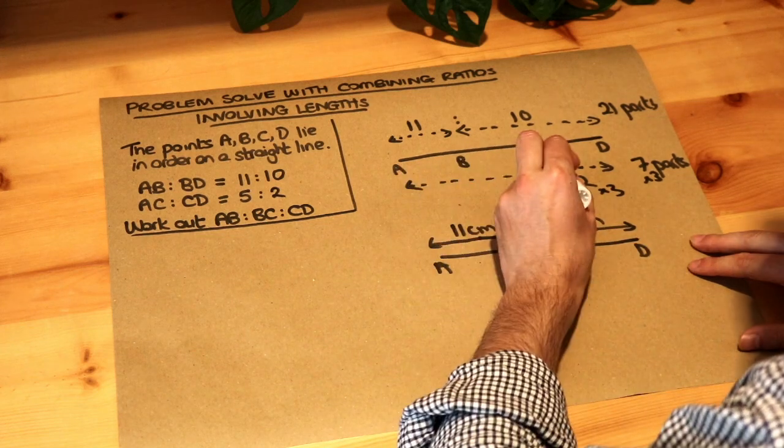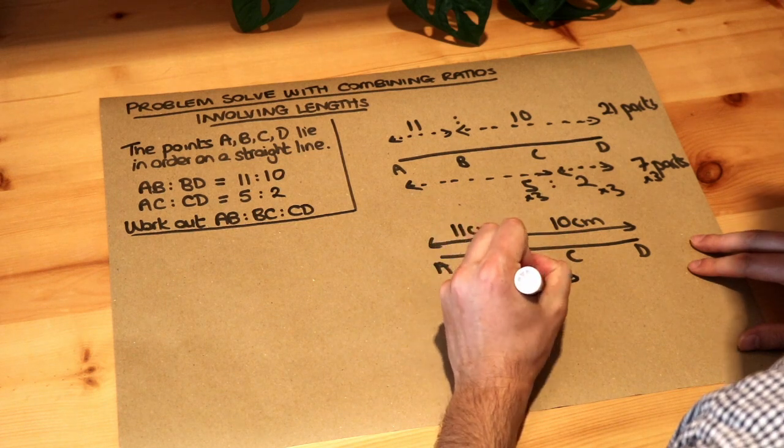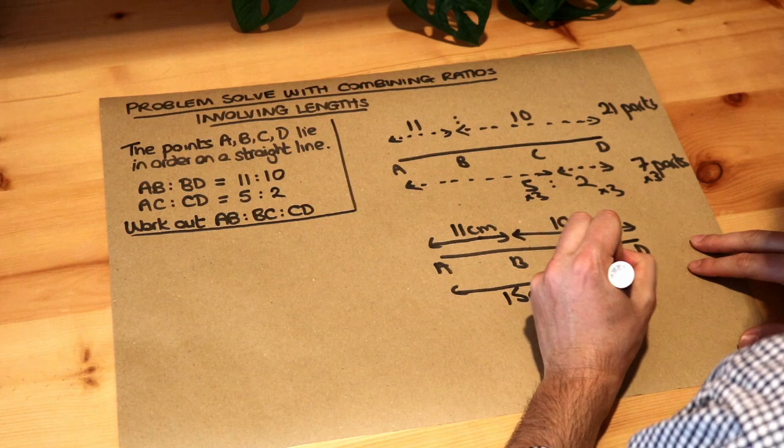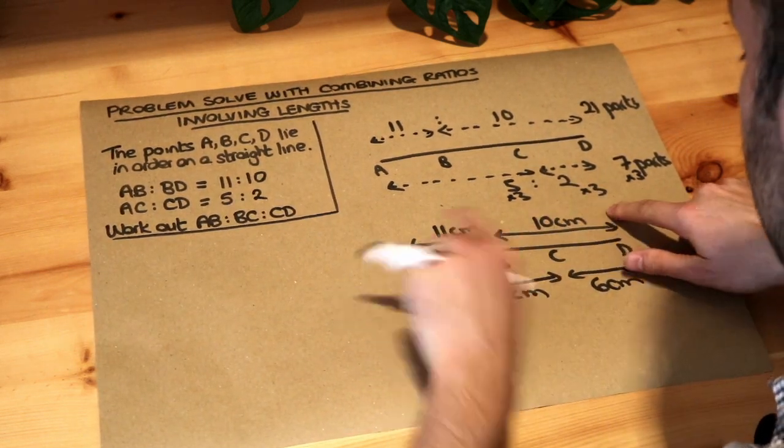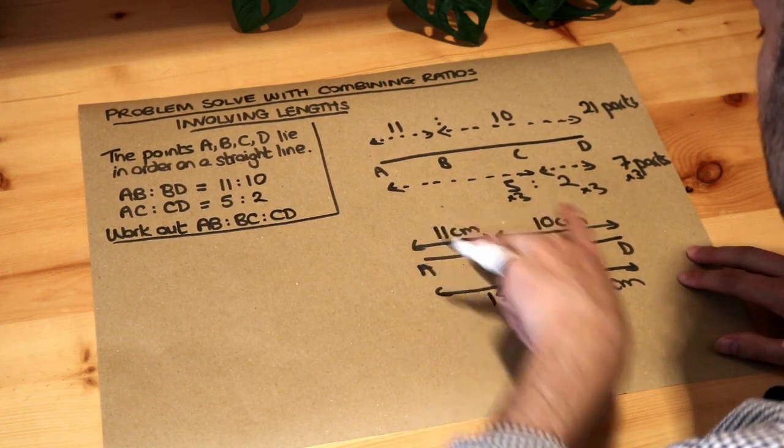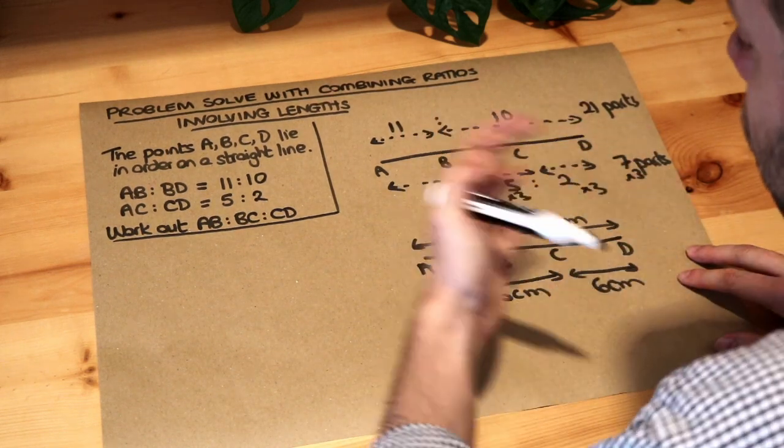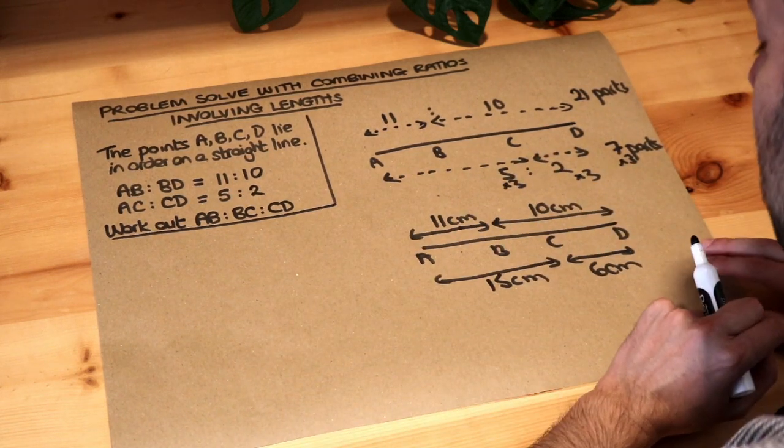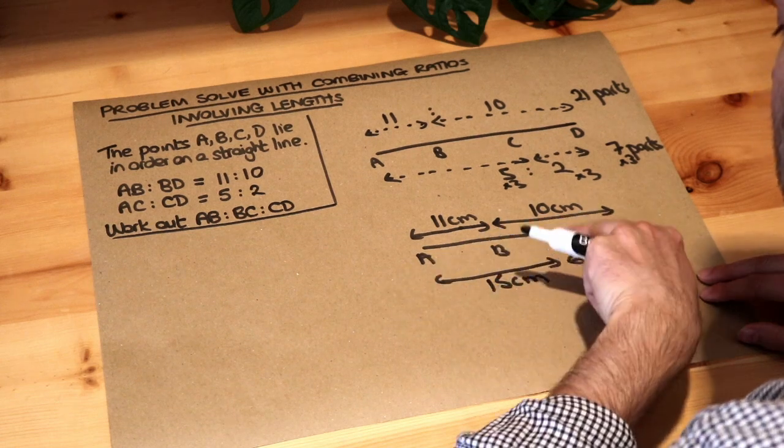So therefore AC, which is what this arrow is, is now 15 centimeters, and 2 times 3 is 6 centimeters. Now these total lengths, top and bottom, are consistent because that's 21 centimeters. Both these lengths here and these lengths are in the original ratios, so we haven't corrupted the question at all. Because we've now got consistent total lengths, it's much easier to see the individual lengths of AB to BC to CD.